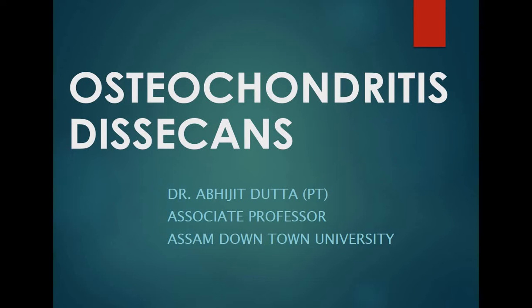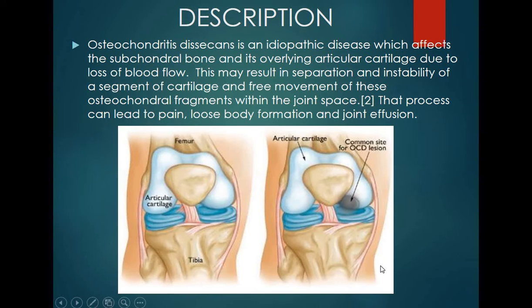Hello students, let us today discuss about the topic called Osteochondritis dissecans. Osteochondritis dissecans is an idiopathic disease which affects the articular cartilage that overlays the subchondral bone and can be found in the joints. This happens due to some kind of loss or restriction in the blood flow to the articular cartilage.